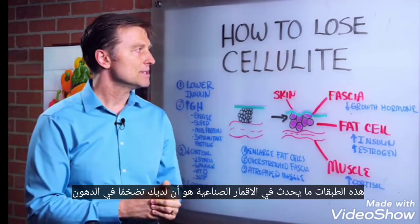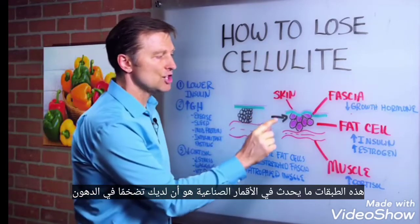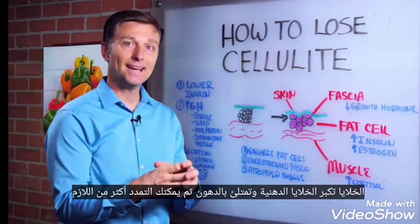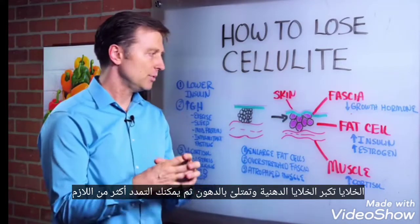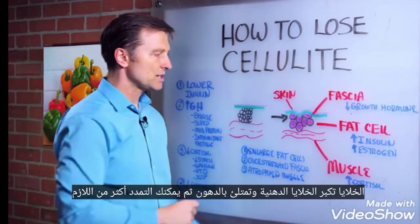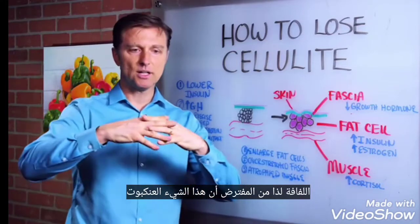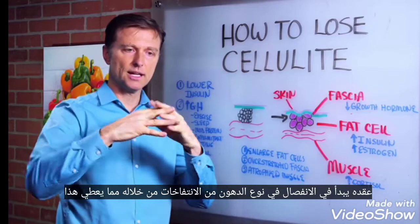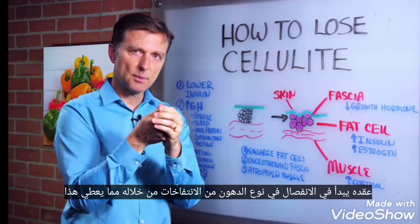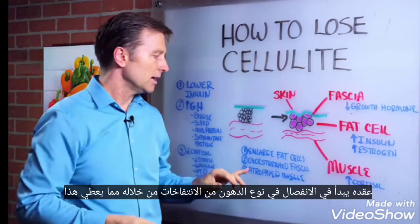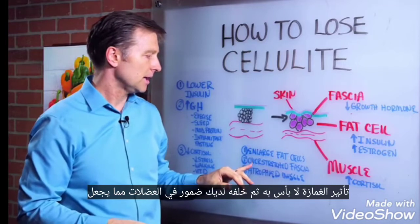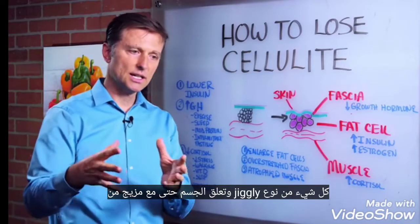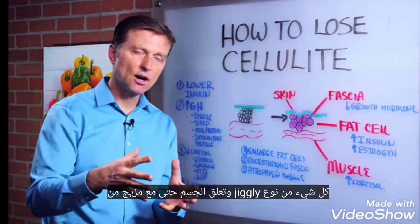What happens in cellulite is you have an enlargement of the fat cells. The fat cells get bigger, they fill up with fat. Then you get an overstretched fascia — this spiderweb thing that's supposed to hold it starts to separate, and the fat kind of bulges up through it, giving this dimple effect. Then behind it you have the atrophied muscle, which makes the whole thing kind of jiggly and hang off the body.